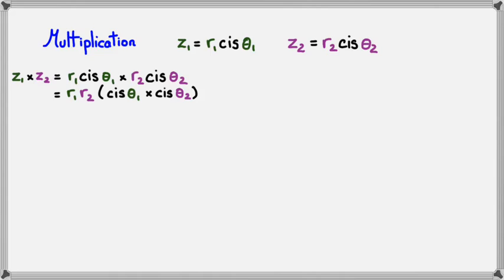From this point onwards, I know that cis is simply cos theta plus i sine theta. So I'm going to replace both of the cis with cos and i sine. What I'm going to end up with is r1 r2 bracket of cos theta 1 plus i sine theta 1 and then cos theta 2 plus i sine theta 2.